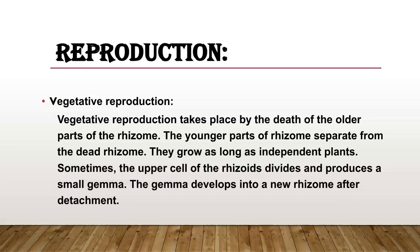Reproduction: in Psilotum, vegetative reproduction occurs. It takes place by the death of the older part of the rhizome; the younger part separates from the dead rhizome and grows as an independent plant. Sometimes the upper cells of the rhizome divide and produce a small gemma. The gemma develops into a new rhizome after attachment. Any outgrowth, bud, or decaying remaining part of the plant body has the ability to produce another new plant — this is called vegetative reproduction.